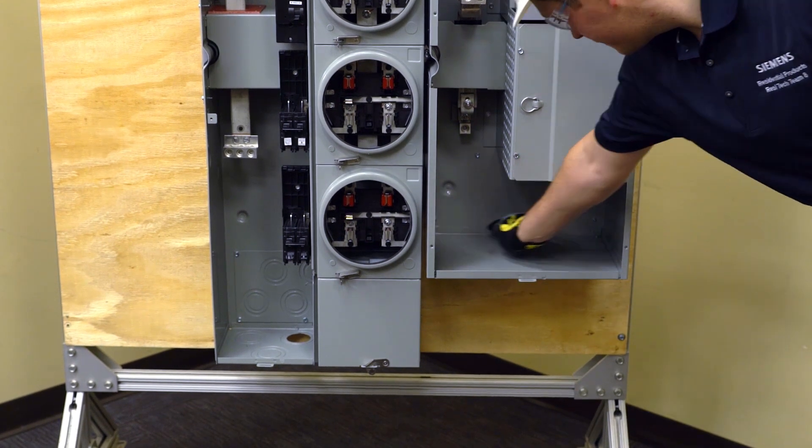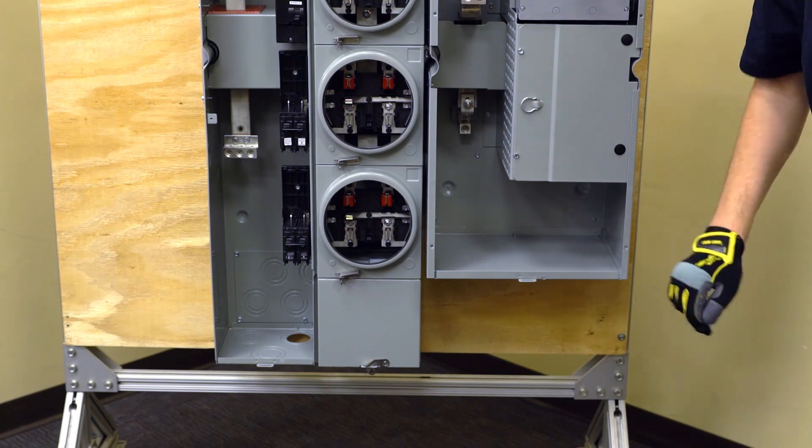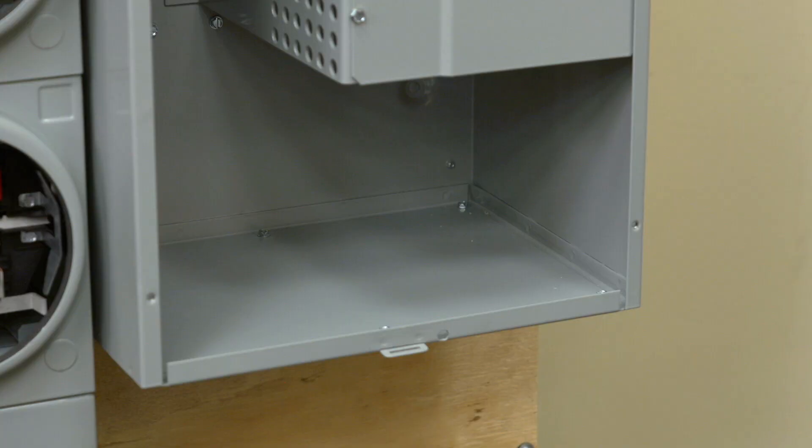The WB main breaker module has a blank bottom end wall. This can be removed for easier installation. The bottom end wall should be reattached once the conduit is lined up and the appropriate holes have been cut in the plate.